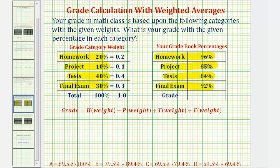To find the grade for the course using these weighted averages, the grade will be equal to the homework percentage, which is 96 percent, we'll leave off the percent for the calculation, times the weight of 0.2, plus the percent for the project, which is 85 percent, times the weight of 0.1.